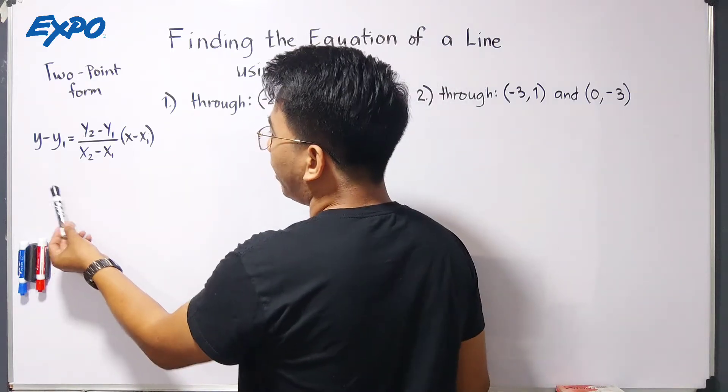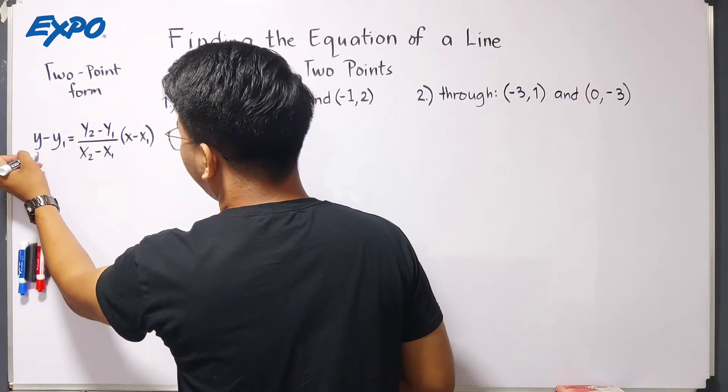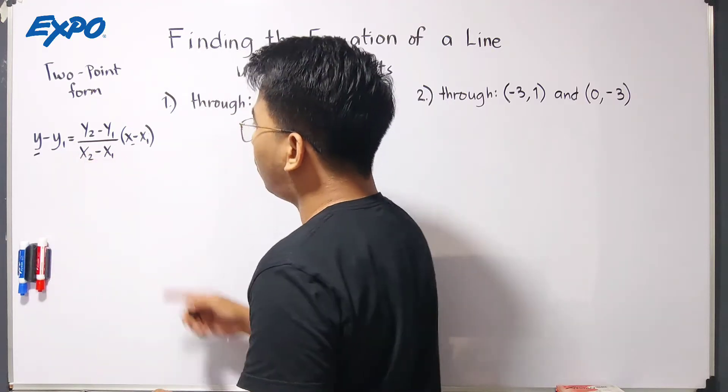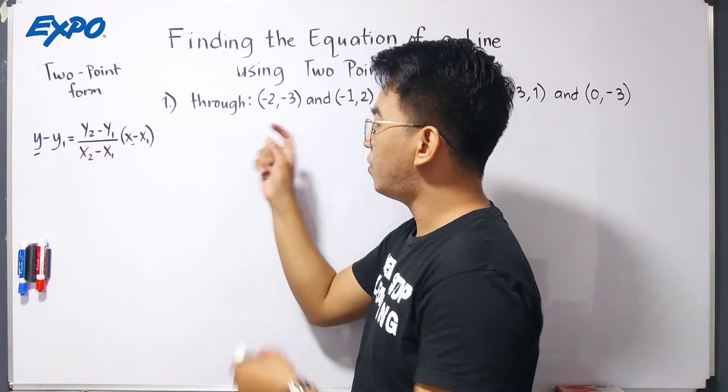In this formula, these are our variables. We have the variable y and the variable x. While the others here come from the given points. So, let's start.